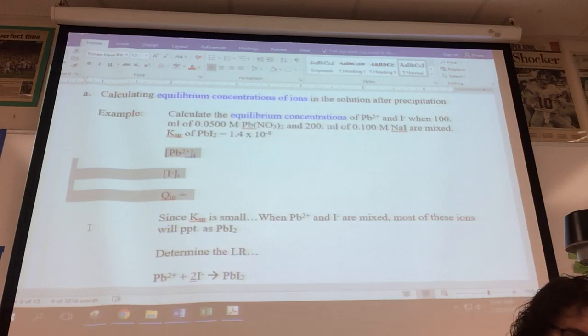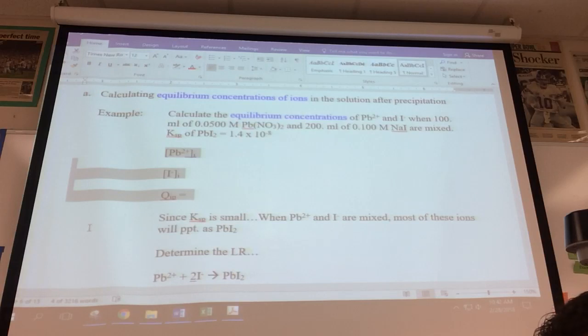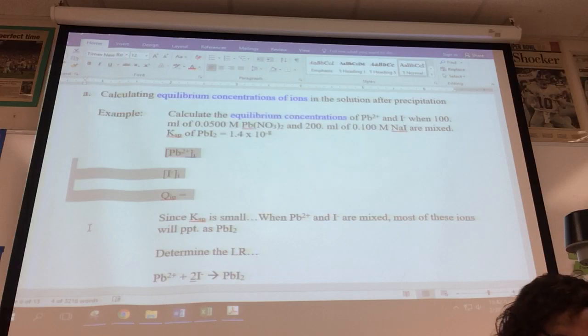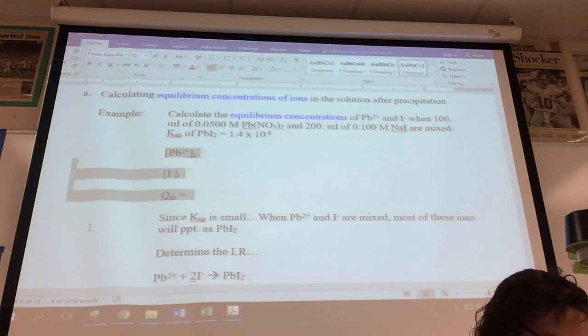Do you have the initial concentrations of ions, and did you calculate QIP? Did you remember to square the iodide? Why do we need to square the iodide?